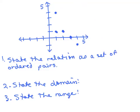Here's a picture of a relation — the relation is the ordered pairs that you see. See if you can state the relation as a set of ordered pairs, then state the domain and the range. You want to use set notation, so use braces. Put the video on pause and try that.